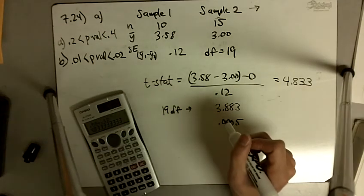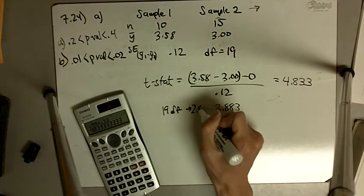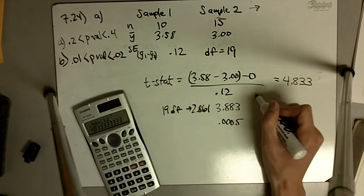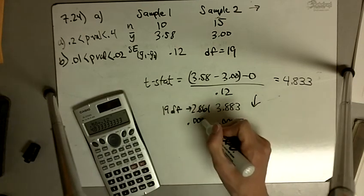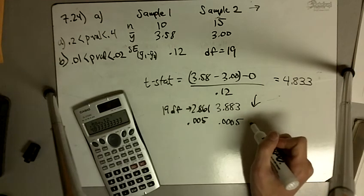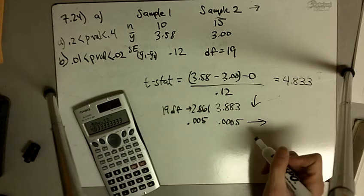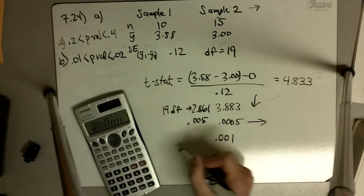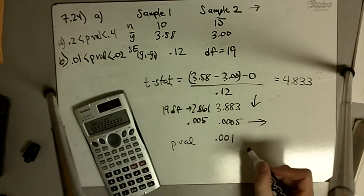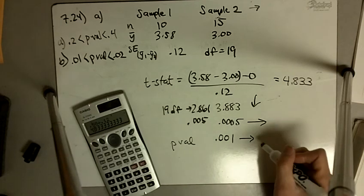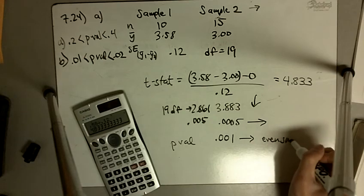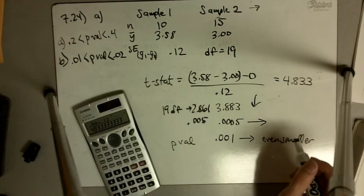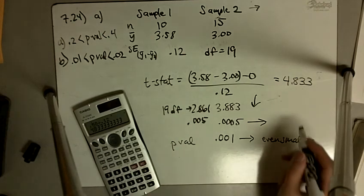The next closest would be 2.861, which is 0.005. Clearly 4.833 is beyond this side, so doubling that this is going to be 0.001. The p-value is going to be 0.001, but it's on this side, which means our p-value is even smaller.